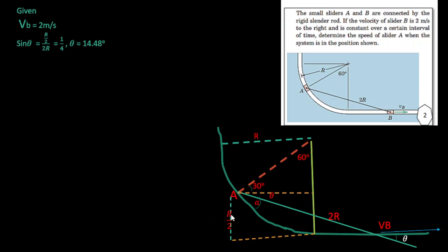As you can see, sin theta equals opposite over hypotenuse, which means the opposite value is R over 2 and the hypotenuse is 2R, which equals 1 over 4. Then we get theta is equal to 14.48 degrees.